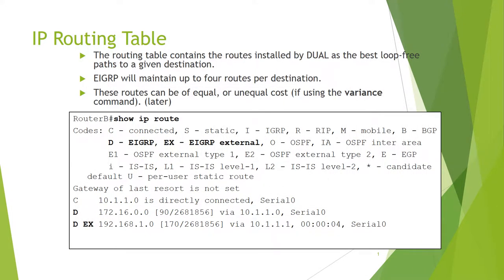In this week we will be discussing IP routing table. The routing table contains the routes installed by DUAL as the best routes to destinations. EIGRP will maintain up to four routes for a destination. These routes can be equal or unequal costs, including the variance command. We can see in the table show IP route and the complete details are given about the route.